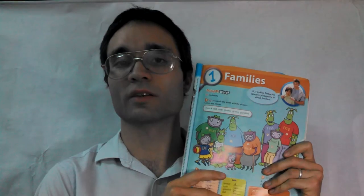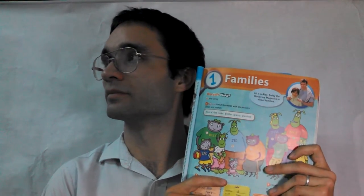Okay, this is Discover English Starter, Unit 1. You have to know mom, dad, brother, sister, granny, and granddad, and family.